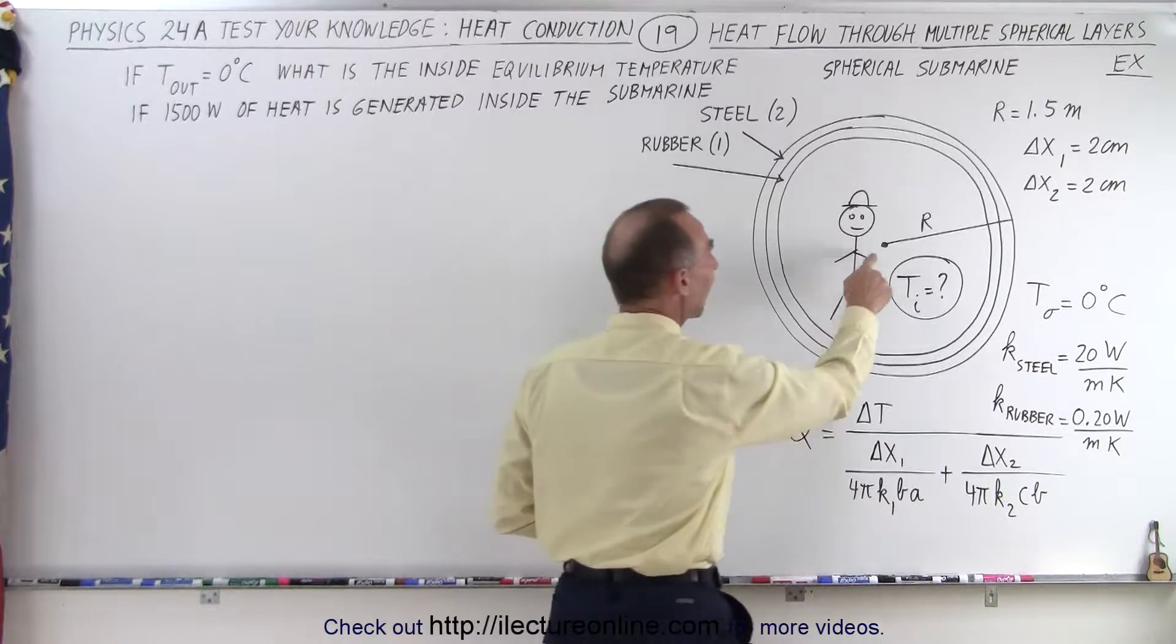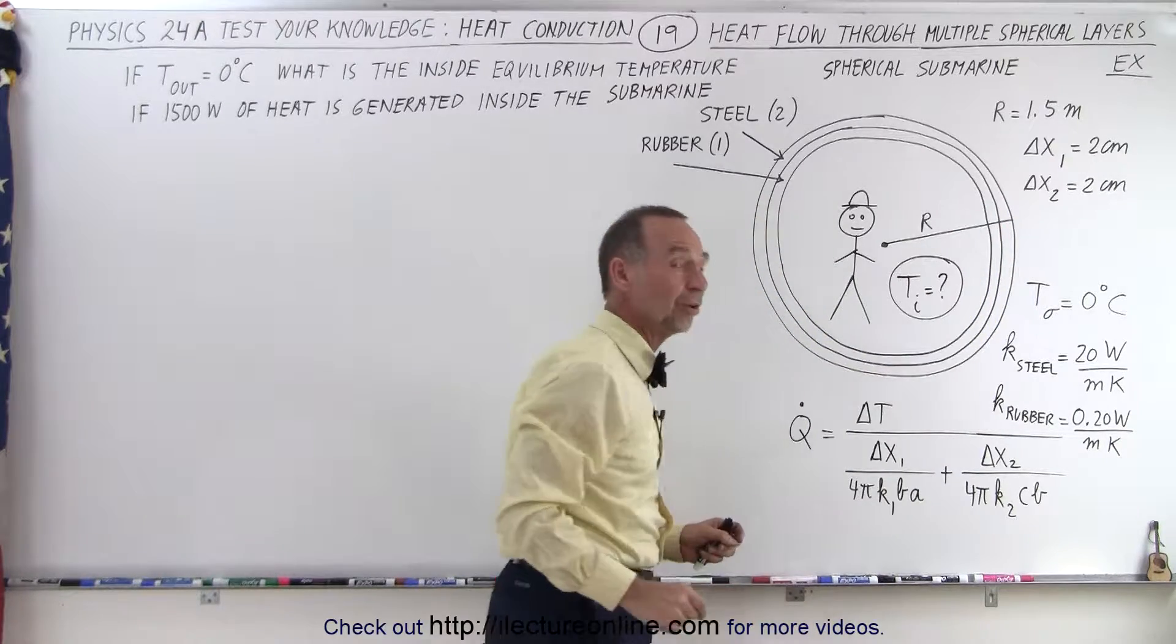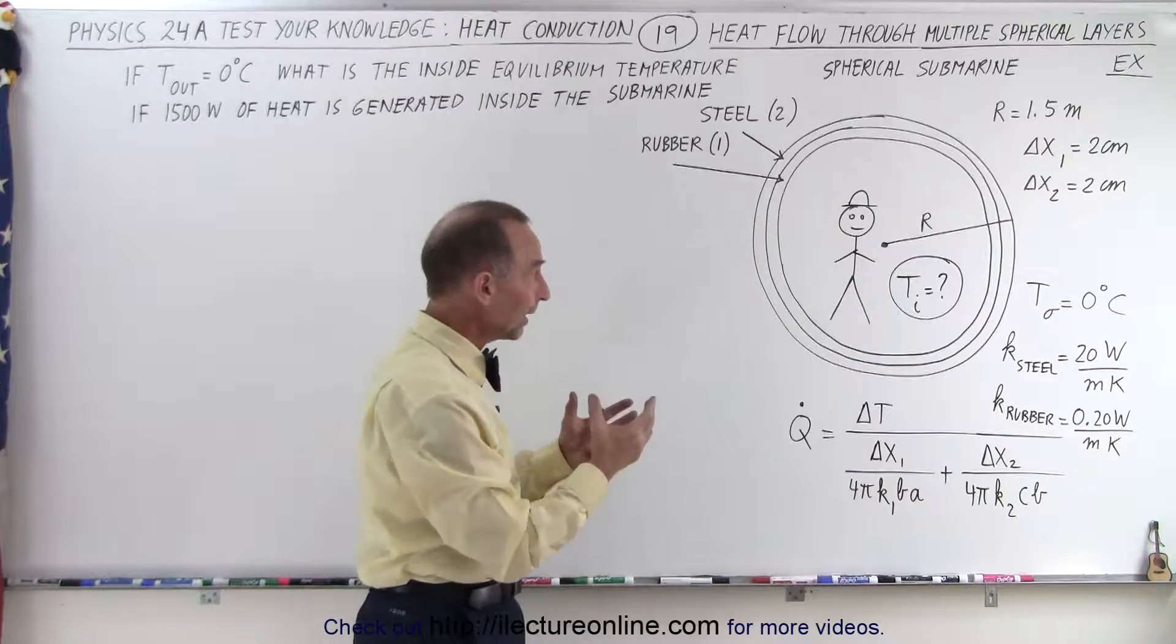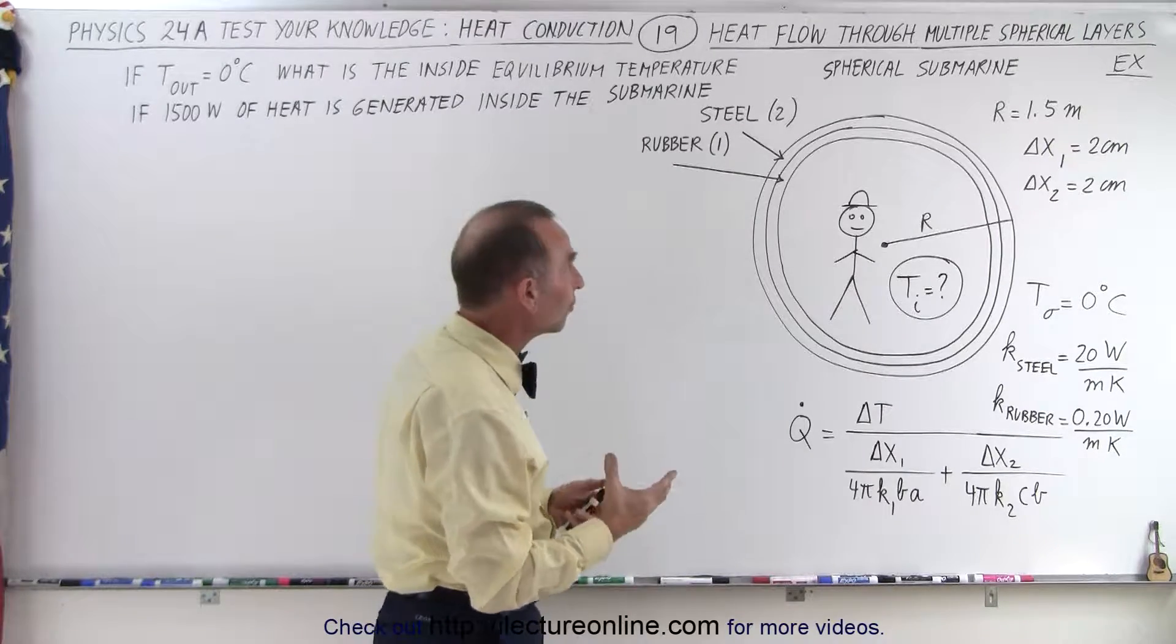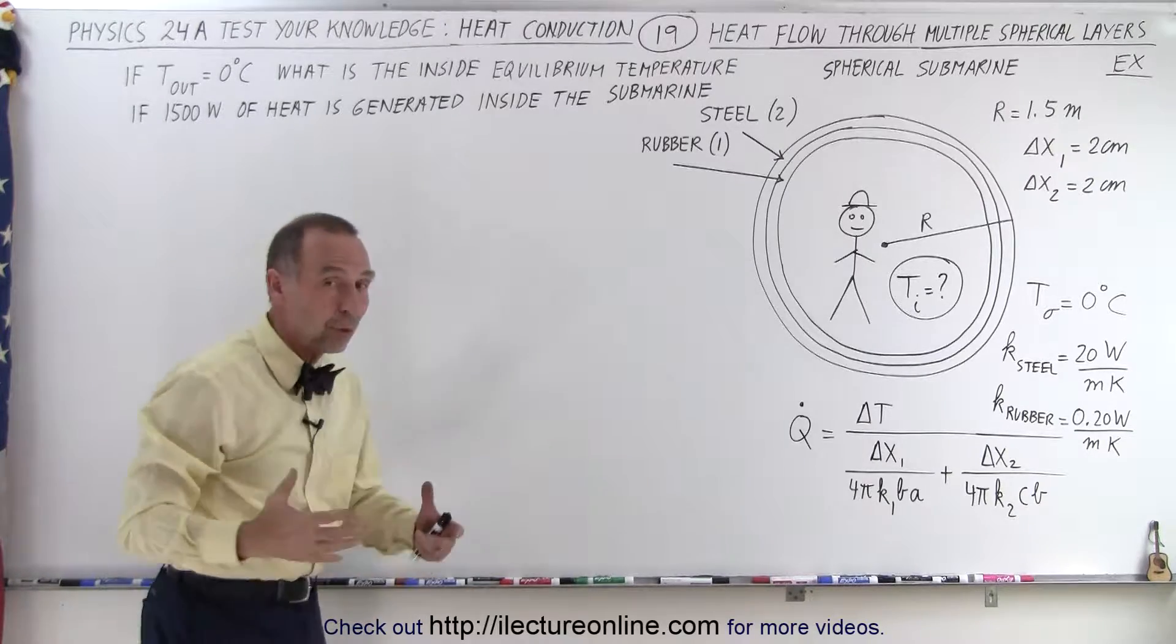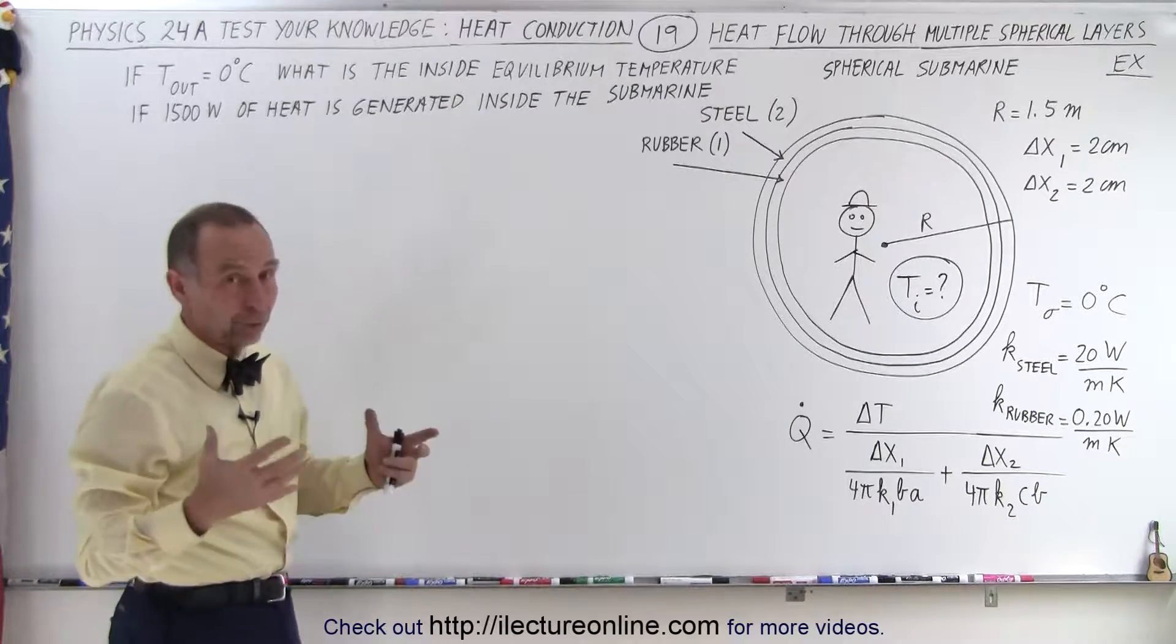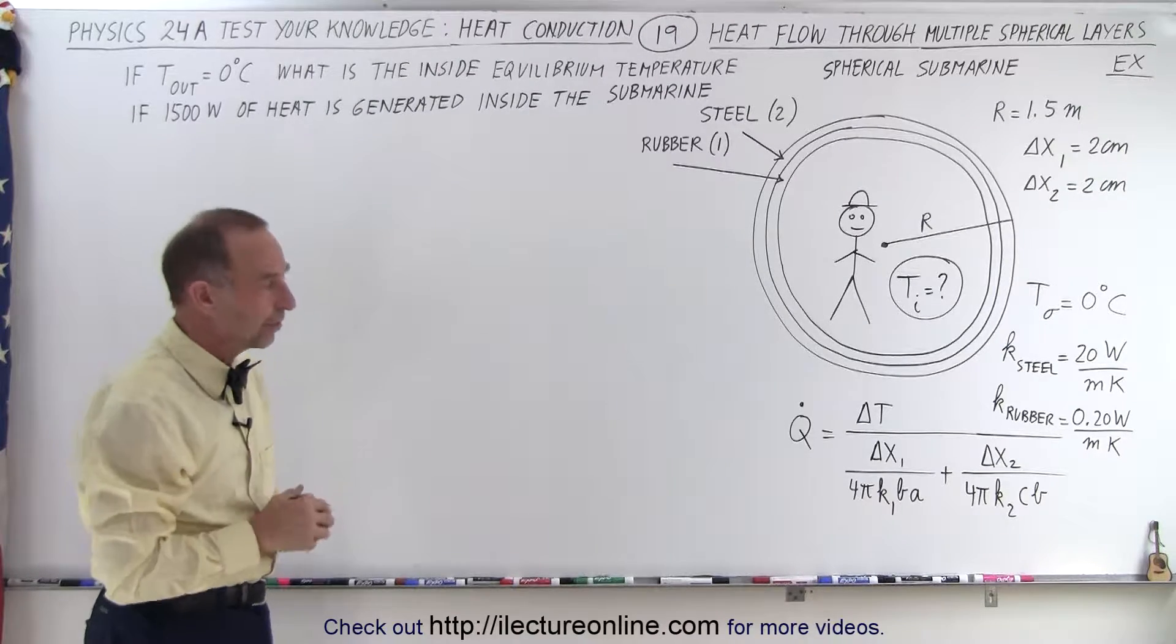Notice that the outside radius is 1.5 meters. So I have 2 centimeters of steel and 2 centimeters of rubber. Assuming that the person inside the submarine plus all the equipment generates 1500 watts. And so if the temperature on the outside is 0 degrees centigrade, what would be the equilibrium temperature on the inside?